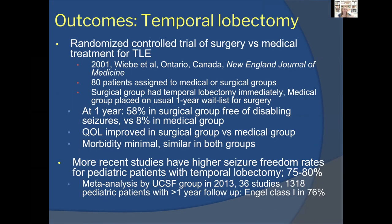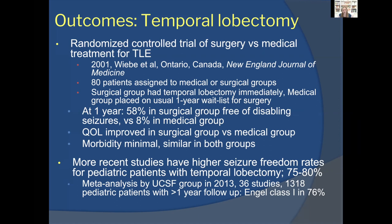Temporal lobectomy is one of the few neurosurgical procedures with good randomized controlled trial evidence. A landmark 2001 Canadian study of 80 surgical candidates assigned patients to either one year of medication or immediate temporal lobe surgery. At one year, 58 percent of the surgical group were free of disabling seizures (Engel class I) versus only 8 percent in the medical group. Even 20 years ago, quality of life was improved in the surgical group. With better MRI and surgical techniques today, studies report 75 to 80 percent of correctly selected patients can be seizure-free, as confirmed in a meta-analysis of 1,300 patients showing 76 percent Engel class I outcomes.